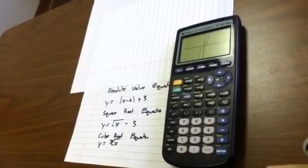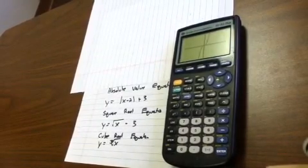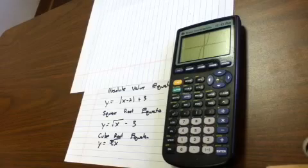Again, review: domain is the coverage along the x-axis, the range is the coverage along the y-axis.